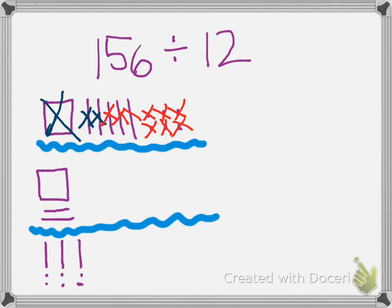So in step two, I made ten groups of twelve, and in step three I made one, two, three groups of twelve.